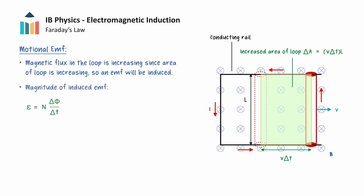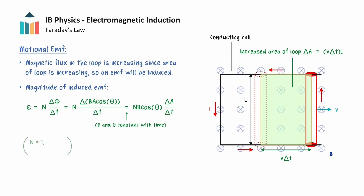We can now determine an expression for the magnitude of the induced EMF using Faraday's law. The magnetic flux density and angle remain constant with time, so these variables can be taken out as constants in Faraday's law. To simplify this expression further, we note that we have a singular loop of wire, so N equals 1, and by taking the normal of the conducting loop to be in the same direction as the magnetic field, theta will also be 0, and so cosine theta will be 1.